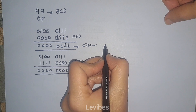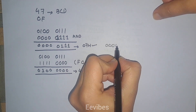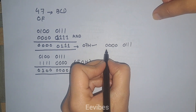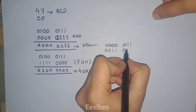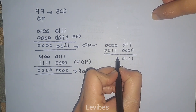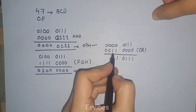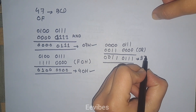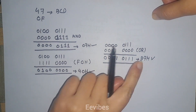The next step is to OR them with 30 hex. Taking 07 hex — which is 0000 0111 — and OR-ing with 30 hex which is 0011 0000: since OR gives 1 if any of the two bits is 1, the result is 0011 0111, which is 37 hex. This is the ASCII equivalent of 7, so the first digit has been converted into ASCII.